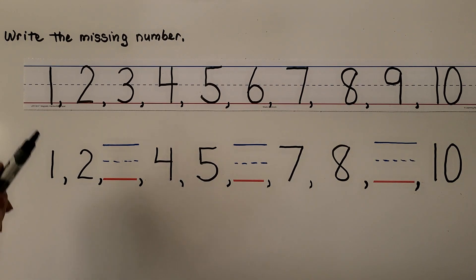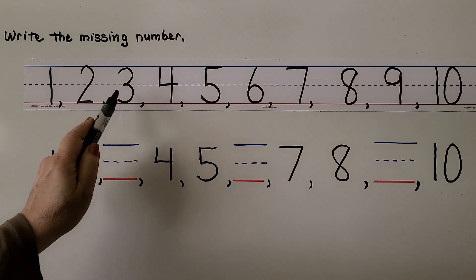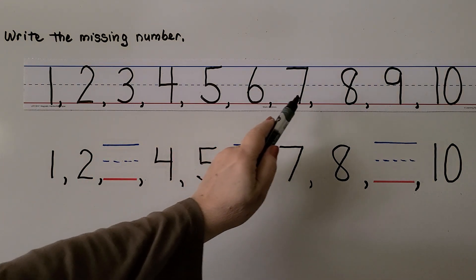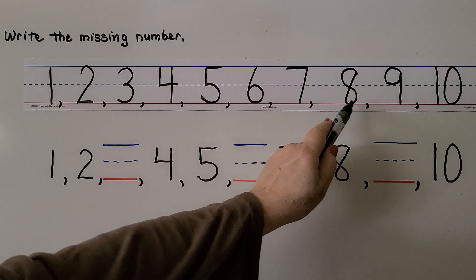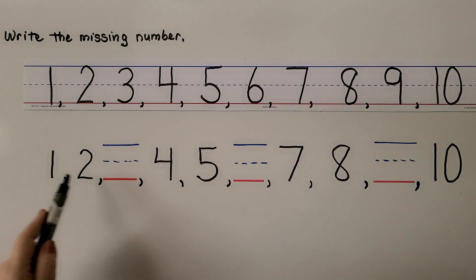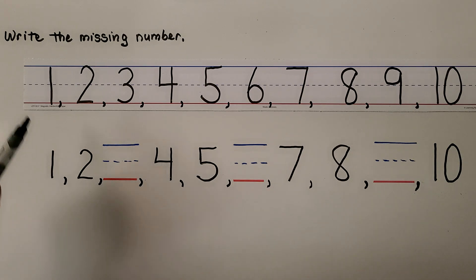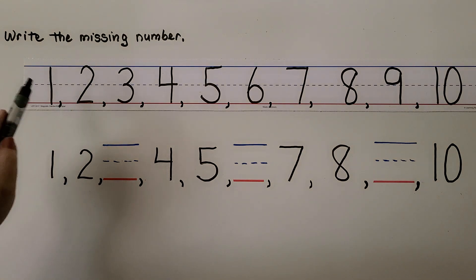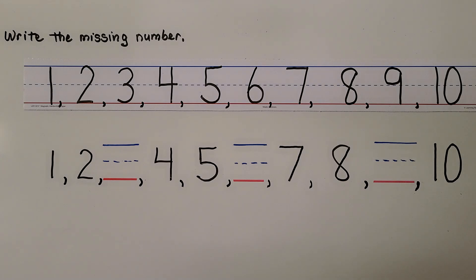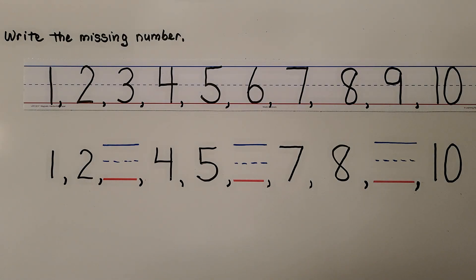Here we have the numbers 1, 2, 3, 4, 5, 6, 7, 8, 9, 10. And here we have numbers but some are missing. We can use the numbers written here in counting order to help us write the missing numbers.